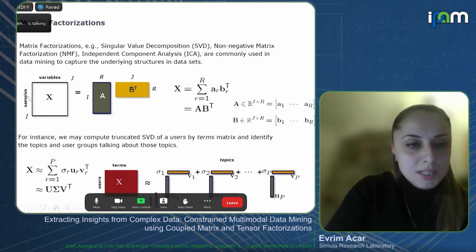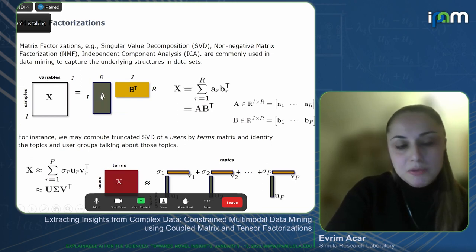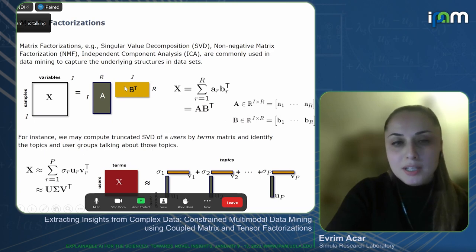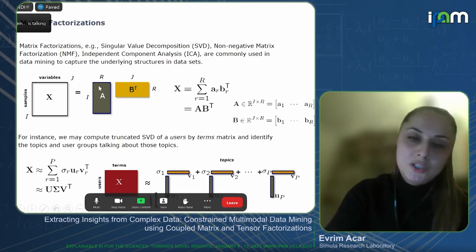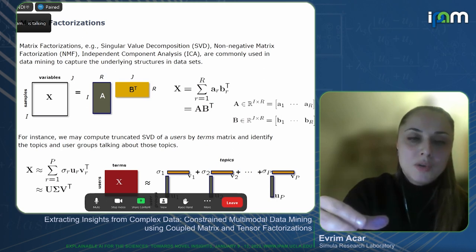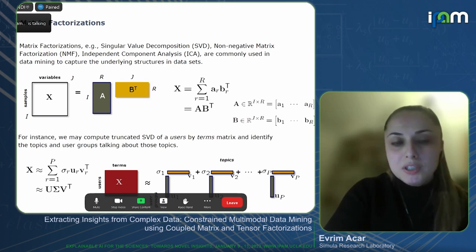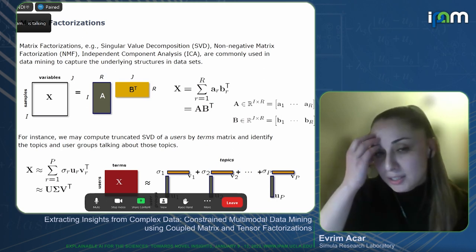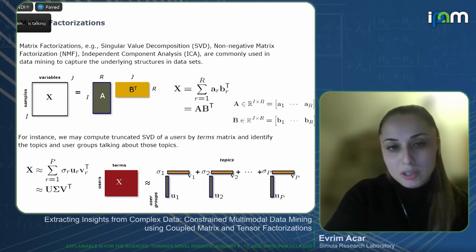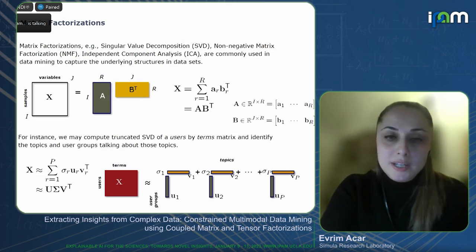Given a sample by variable matrix X, we can factorize it as A times B transpose, where the columns of B may correspond to underlying patterns and each row of A indicates how much each pattern contributes to a sample's measurements. By imposing different constraints on these factor matrices, we can formulate this as singular value decomposition, non-negative matrix factorization, or independent component analysis.